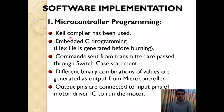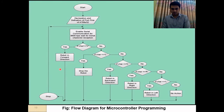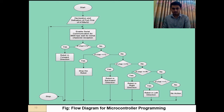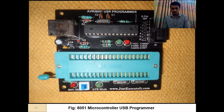Moving to software implementation: for microcontroller programming, we use the Keil compiler. Embedded C programming is used and a hex file is generated before burning the program into the microcontroller. This flow diagram shows how the microcontroller handles incoming data. Data is decoded by the microcontroller using switch-case logic to run the robot in different directions. This device is the USB programmer used to burn the program into the microcontroller.